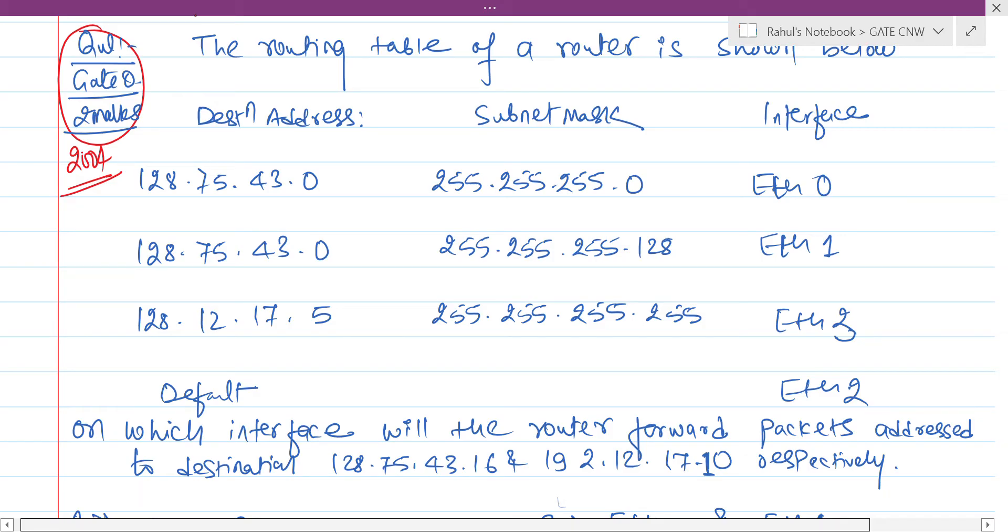The routing table of a router is shown below where we are using destination address, subnet mask, and interface. Now on which interface will the router forward packets addressed to destination 128.75.43.16 and 192.12.17.10 respectively? You only need to do the bitwise AND operation with this IP address to this.